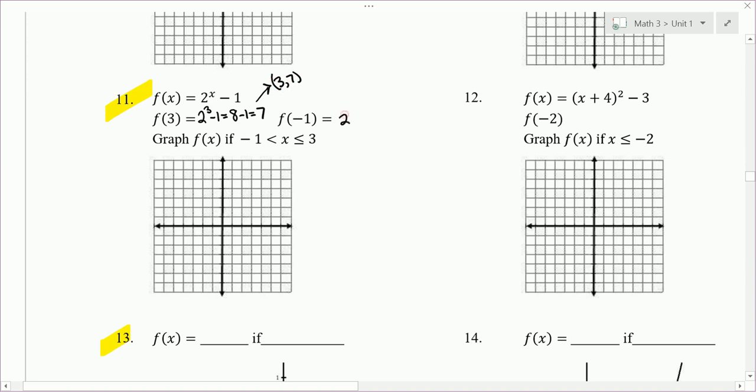f of negative 1, we get 2 to the power of negative 1. We're going to have to remember negative exponents, minus 1. 2 to the negative 1 is 1 half, that's when you get your fraction. And 1 half minus 1, I'm going to change 1, that's 1 over 1. I'm going to multiply top and bottom by 2. And so I get 1 half minus 2 over 2. Get that common denominator so you can subtract the fractions. 1 minus 2 is negative 1 half. So second point, we plugged in a negative 1, we got negative 1 half.